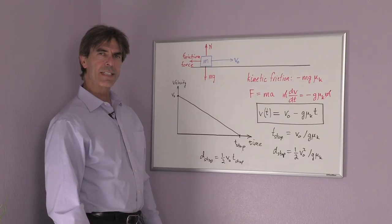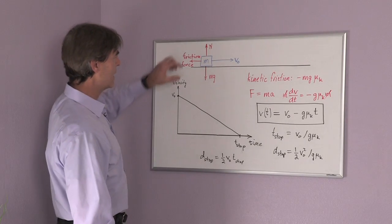Hello, my name is Harold Yorke. I'm a research scientist in Pasadena, California, and I will be talking about how to calculate the speed of a moving object using kinetic friction.